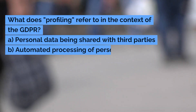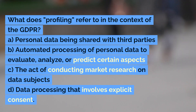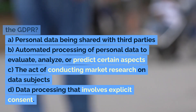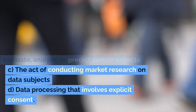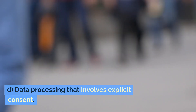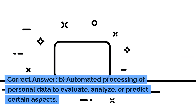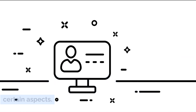What does profiling refer to in the context of the GDPR? A. Personal data being shared with third parties. B. Automated processing of personal data to evaluate, analyze, or predict certain aspects. C. The act of conducting market research on data subjects. D. Data processing that involves explicit consent. Correct answer: B. Automated processing of personal data to evaluate, analyze, or predict certain aspects.